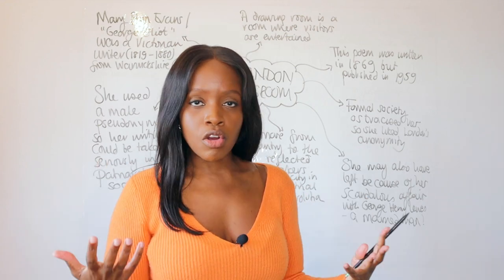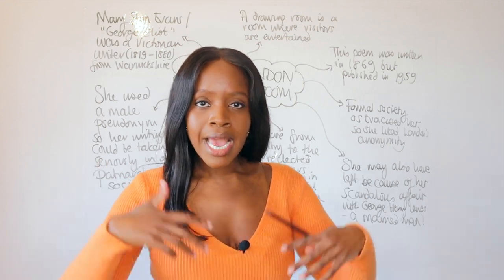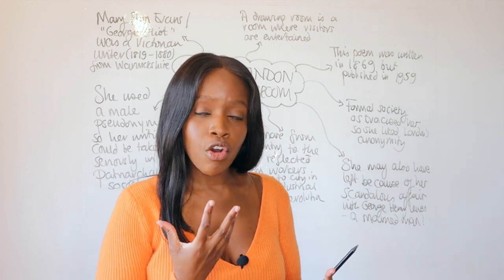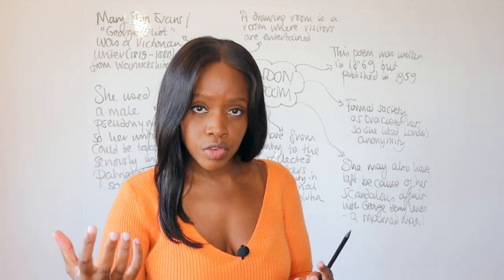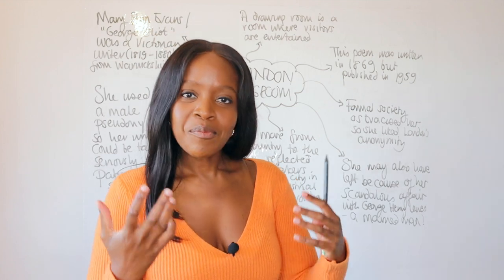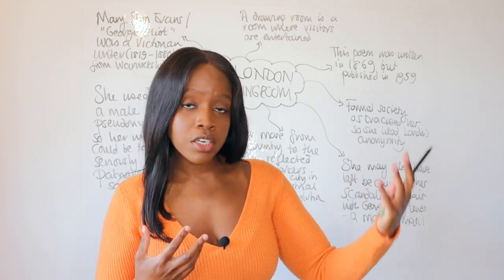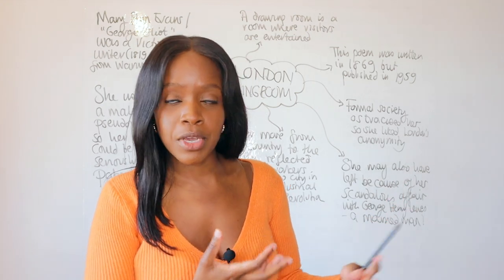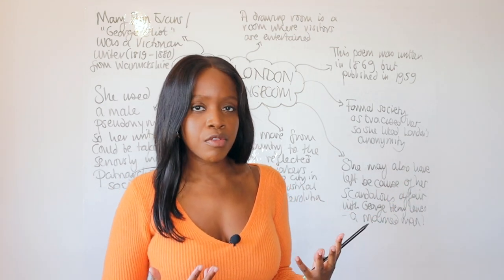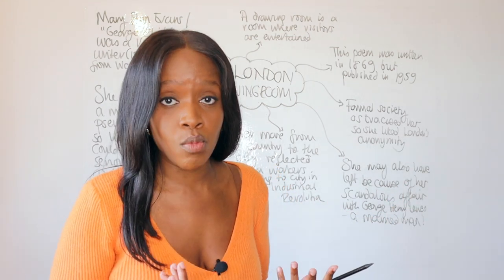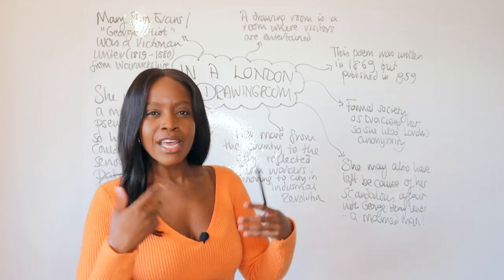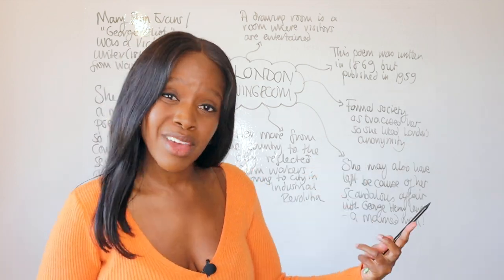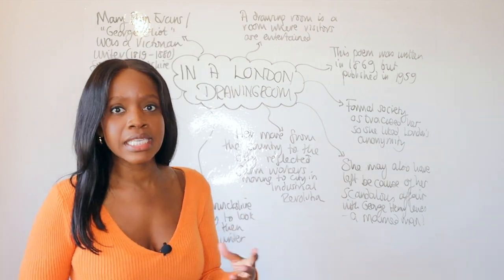Women were expected to simply marry, look after children, and be passive wives. So her being very active in leaving her county and moving to London — which was very far from Warwickshire at the time, travelling by horse and carriage — was seen as a very radical move as an independent woman. Women were not expected to be independent; they were expected to be very dependent, firstly on their families and then on their husbands. She really went against this trend.